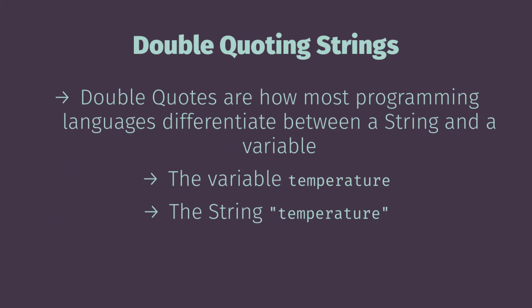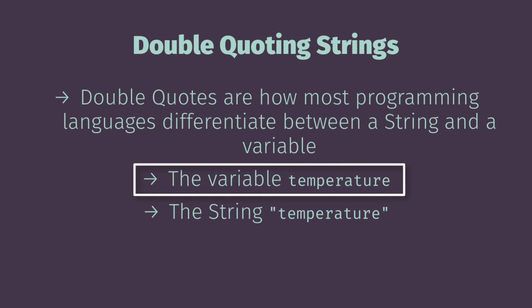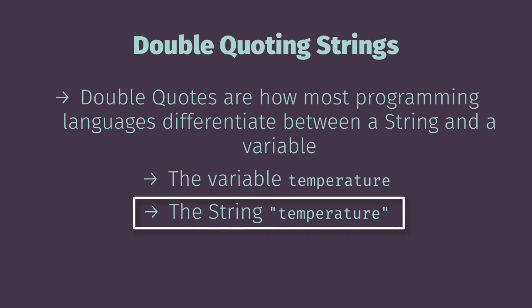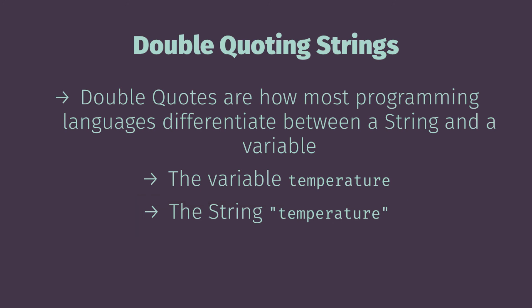It's important to stress that strings have double quotes around them, and this is how the programming environment can tell the difference between words meant for the human and variables meant for the programming environment. For example, a variable named 'temperature' and a string named 'temperature' look the same — the only way the computer can tell them apart is by the double quotes. The variable is a storage location; the string is a word intended to be printed out.